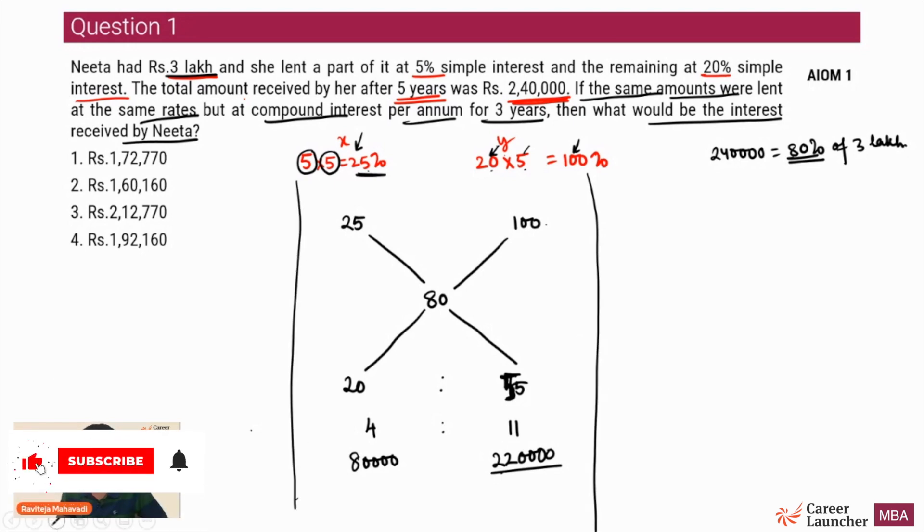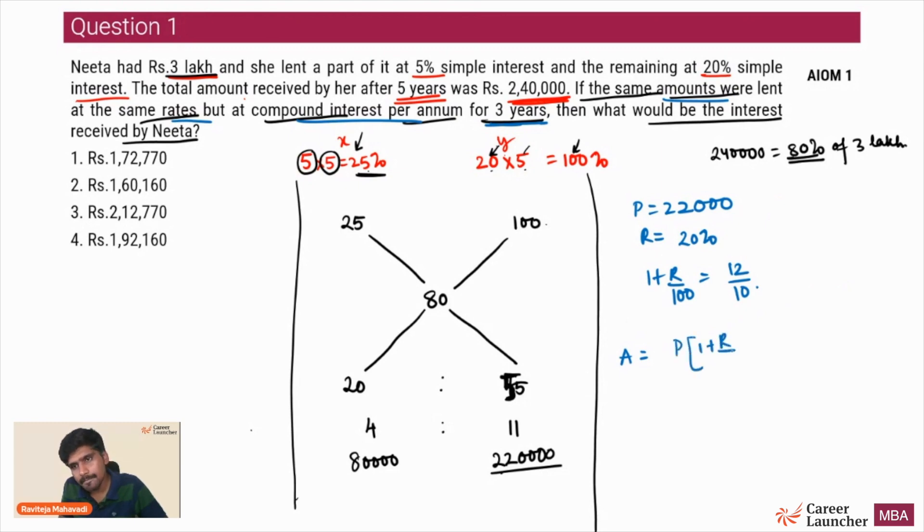We have figured out both the principles. Now we have to apply compound interest to these principles. The same amounts were lent at the same rate but for 3 years compounded annually. So let's say my principle was Rs. 2,20,000. Rate of interest is 20%. So 1 plus r by 100 is going to be 12 by 10. My amount in this case will be equal to P into (1 plus r by 100) whole cube, which is equal to 2,20,000 into 12/10 into 12/10 into 12/10.